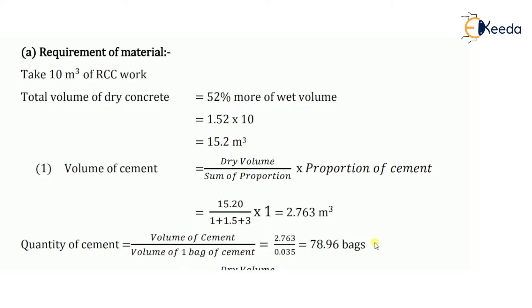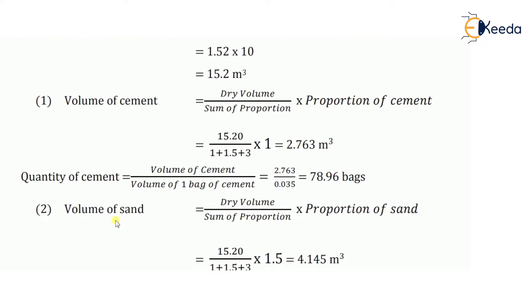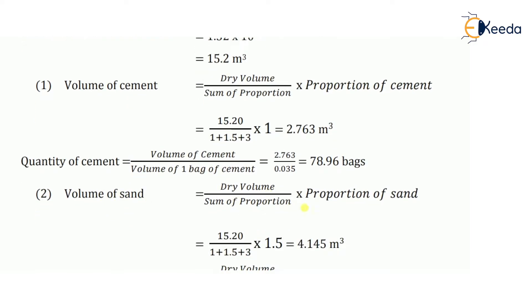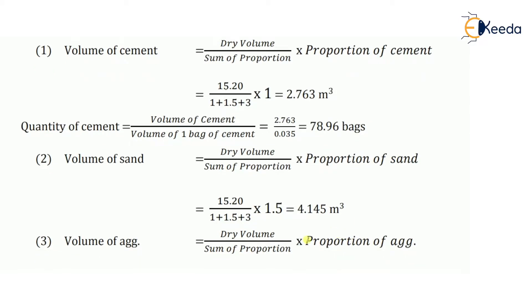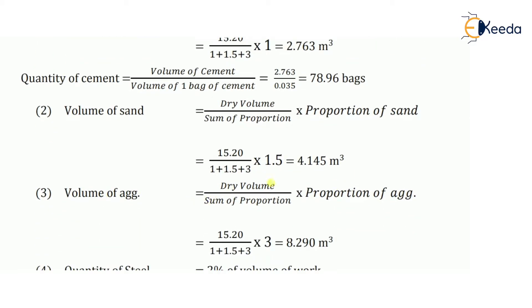Next, calculate the volume of sand using the same formula: dry volume divided by sum of proportions, multiplied by proportion of sand (1.5). This gives 4.145 meter cube. Then for coarse aggregate: dry volume 15.20, divided by sum of proportions, multiplied by proportion of aggregate (3), which comes as 8.290 meter cube.